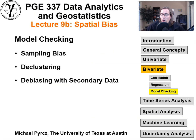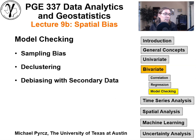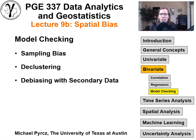This concludes the overall set of lectures on spatial bias — we covered sampling bias and how to mitigate it, declustering, and now debiasing approaches. I hope this was helpful to you. I'm Michael Perch, an associate professor at the University of Texas at Austin, where I teach and conduct research on data analytics, geostatistics, and machine learning. If you're working for a company and want to partner and support student research, or want to learn more, go ahead and contact me. I pick up my phone and I'm happy to help out.